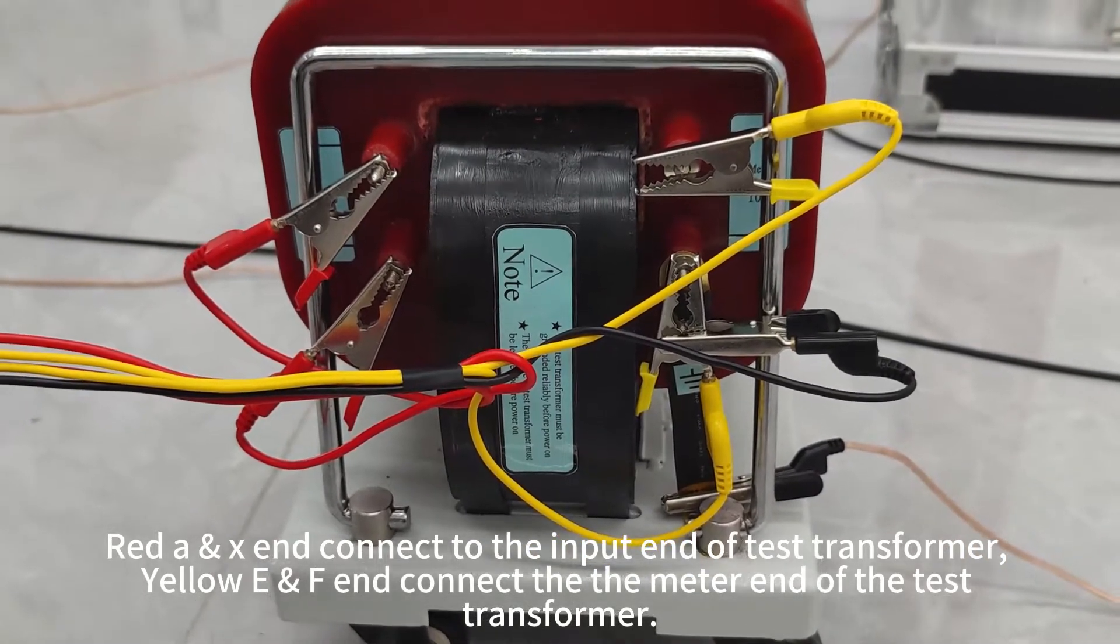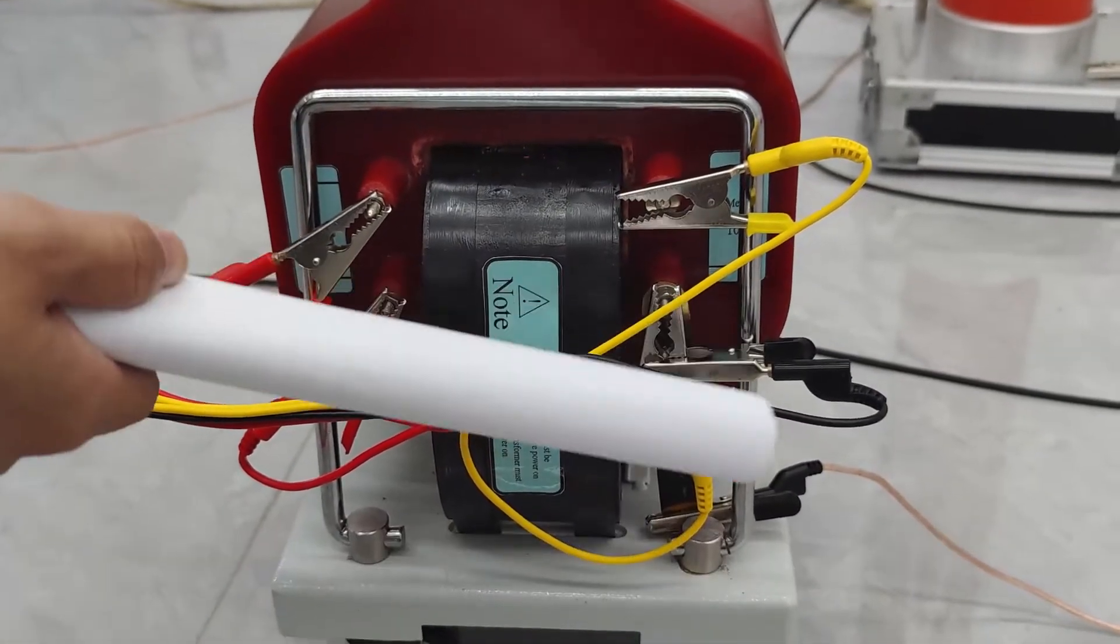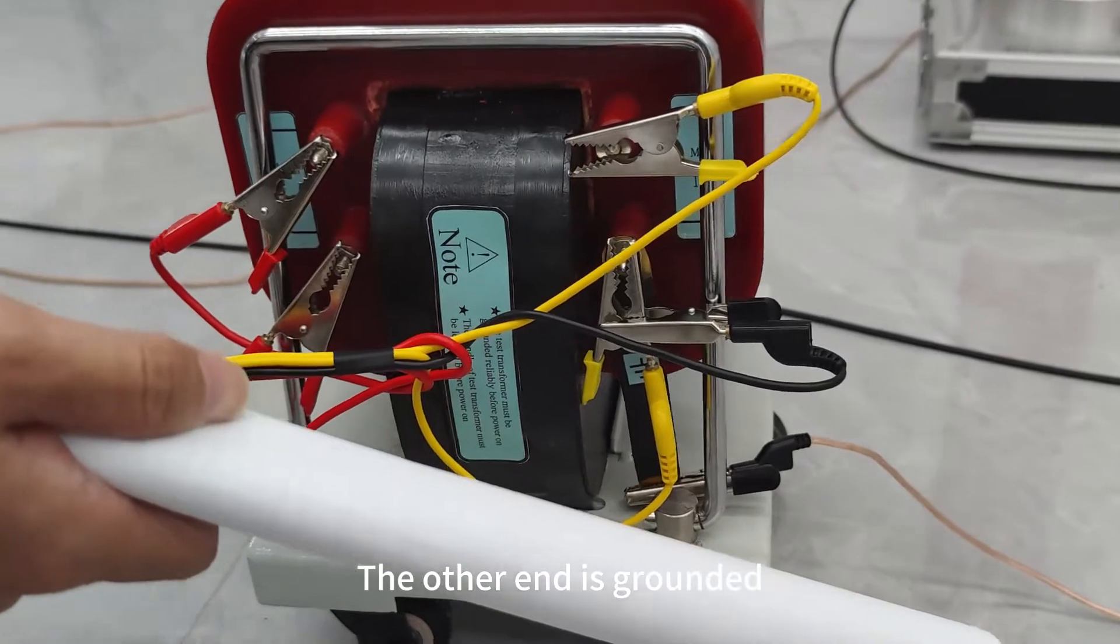Yellow E and F end connect to the meter end of the test transformer. The other end is grounded.